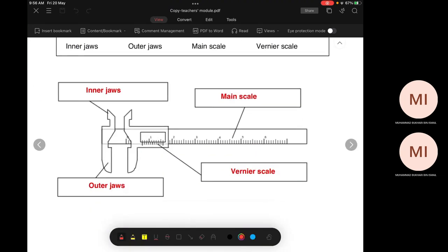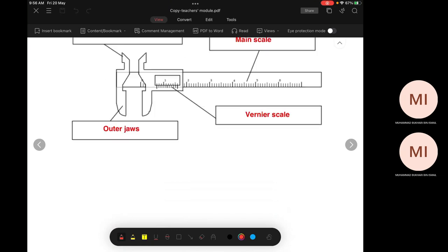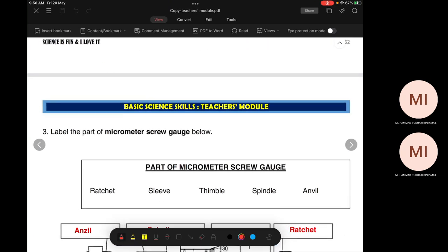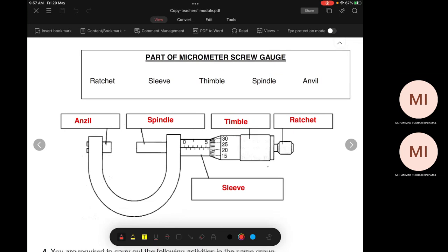You must remember all this. And also micrometer screw gauge: anvil, spindle, timber, ratchet, and sleeve. Make sure you remember all this.